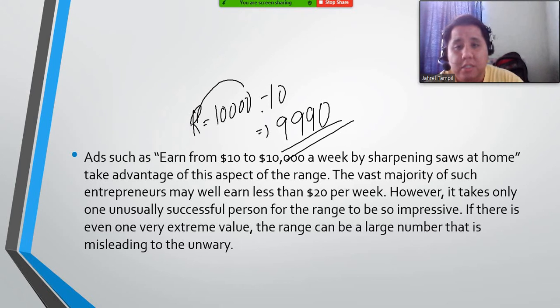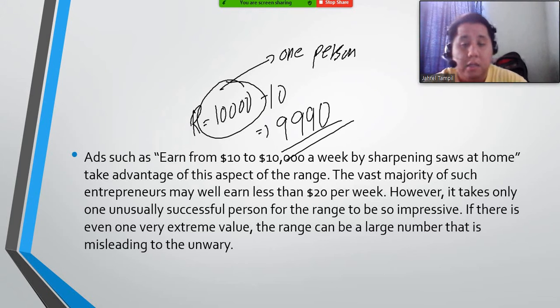However, what if this person is just one person only? One person only. The range would be very big, but it would be very difficult to get to that value because that's only one person that's affecting the entire data set.